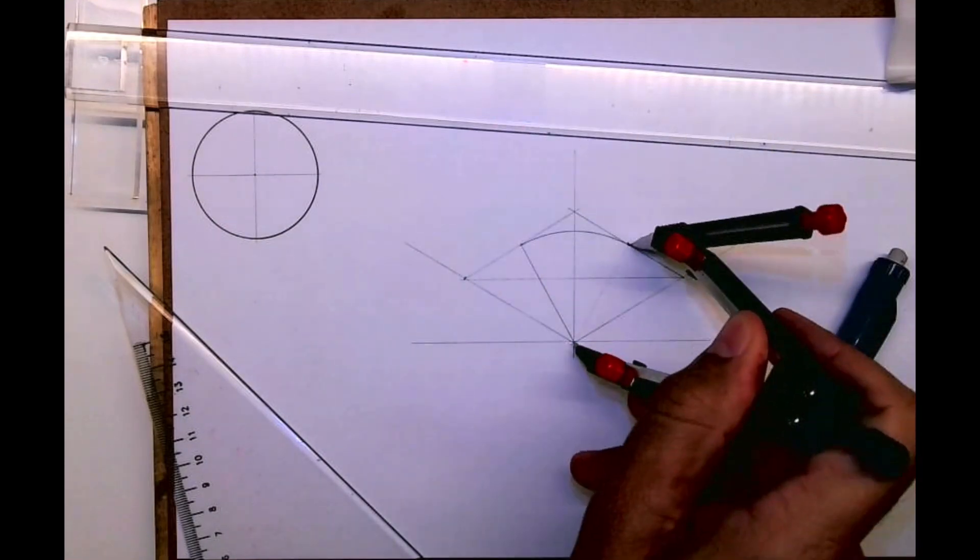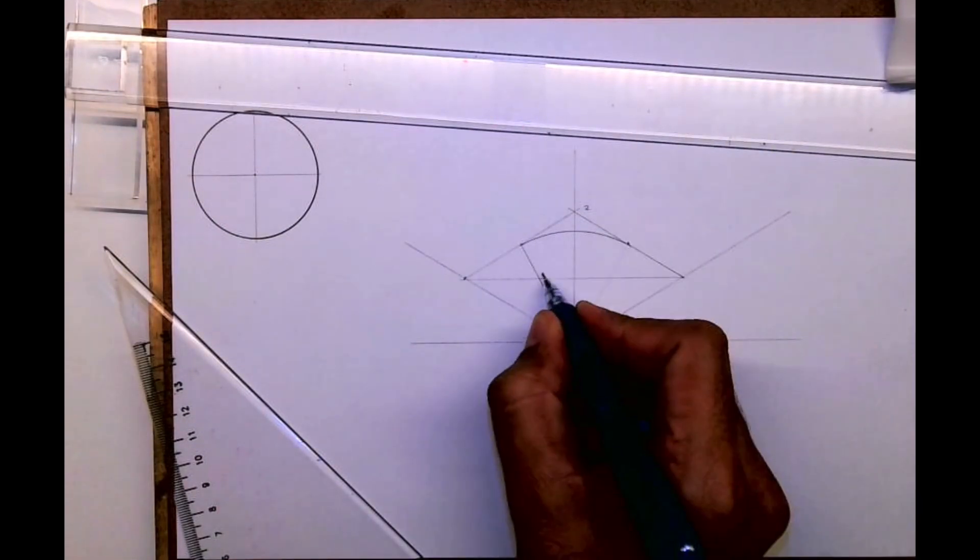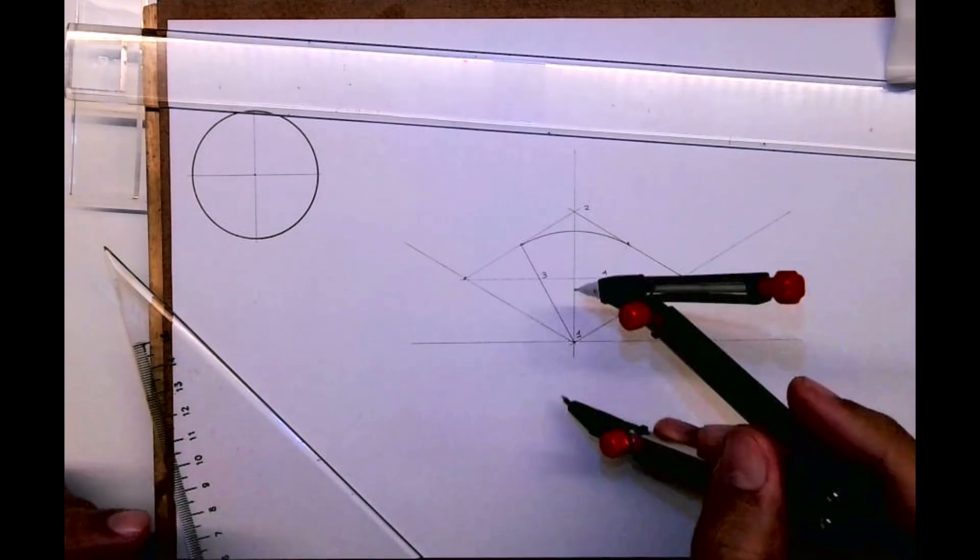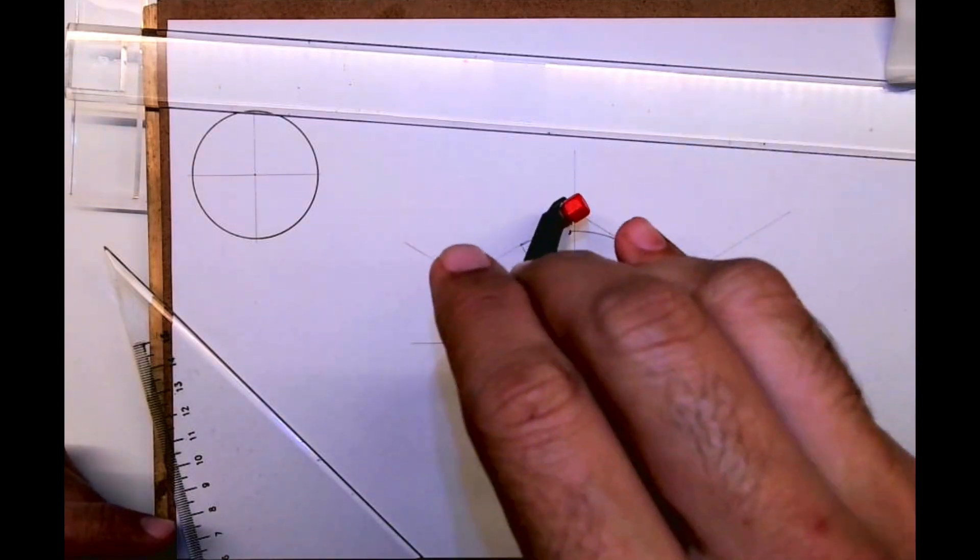This is point one and you draw an arc like this. See this is one, this is two, this is three, this is four. So you take one to this radius, from two again you draw a curve.